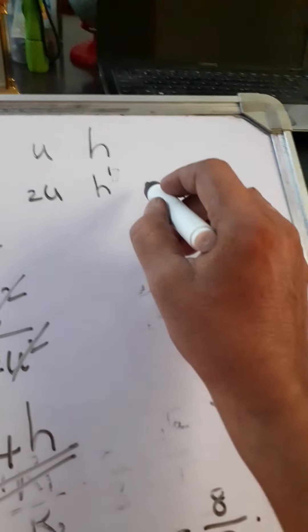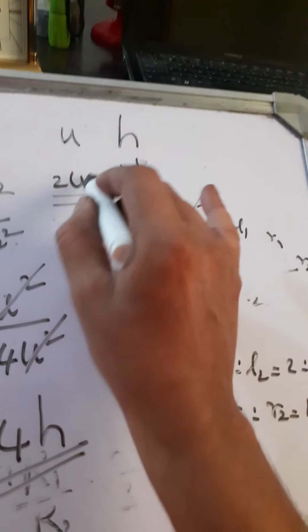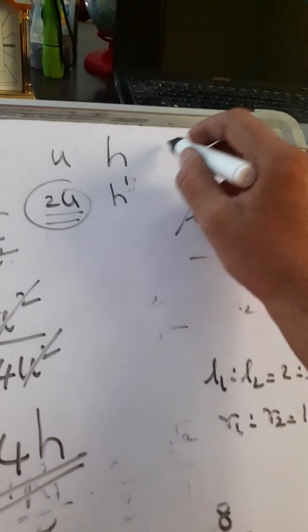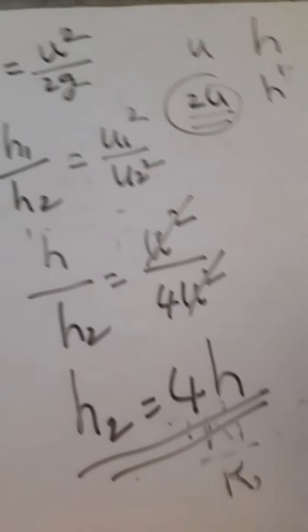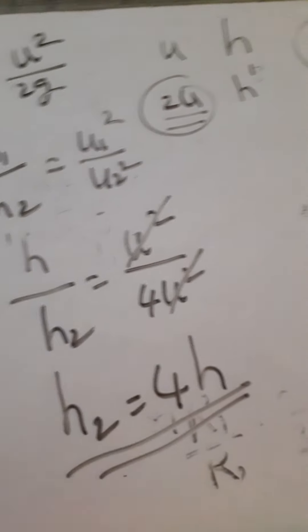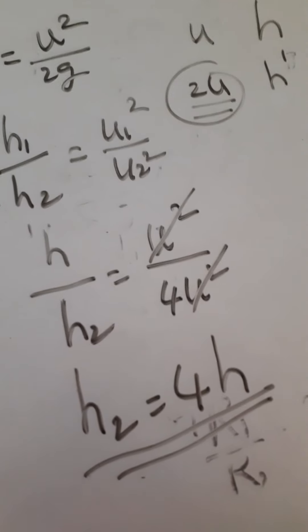The height raised by the body if it is projected with double the velocity is 4 times that of the initial height raised. So proportionals can be used in each and every chapter and very much useful.